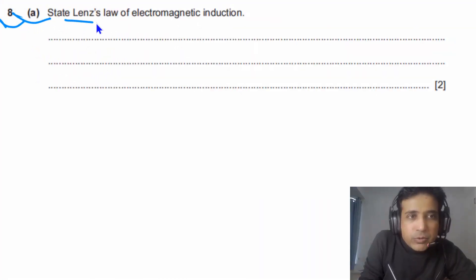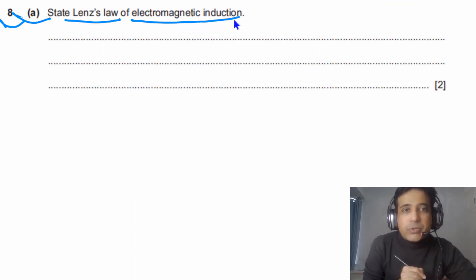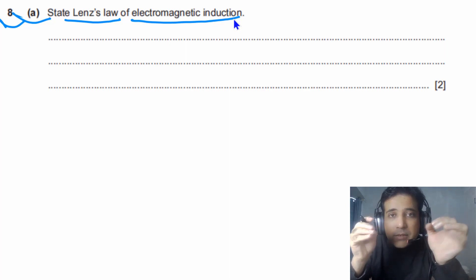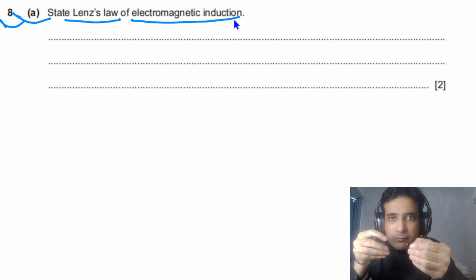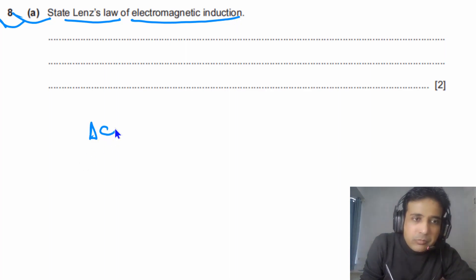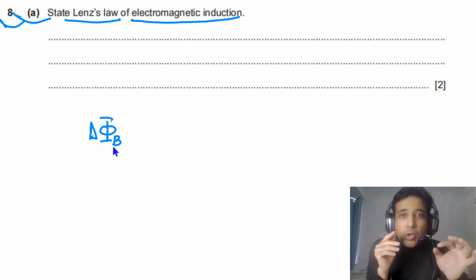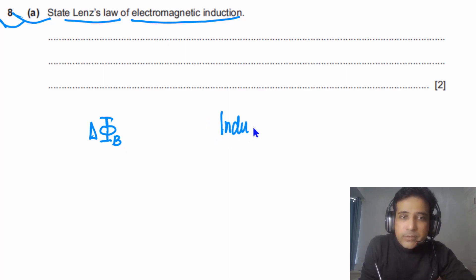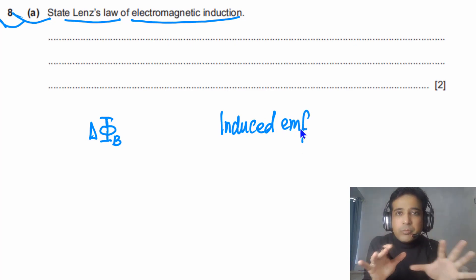For question number 8, Part A, we need to state Lenz's Law of Electromagnetic Induction. Lenz's Law and Faraday's Law of Electromagnetic Induction simply tell us the relationship between change in magnetic flux and induced EMF. Change in magnetic flux means changing magnetic flux linkage, because practically we always use more than one loop of wire. The second quantity we have is induced EMF.